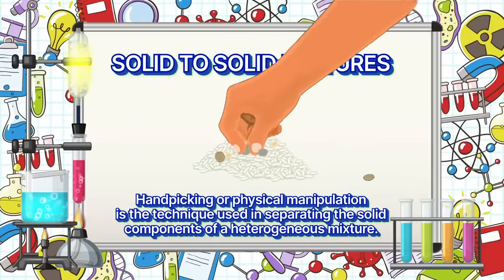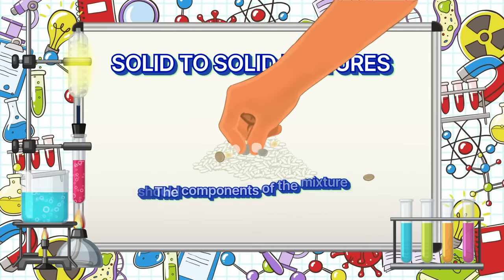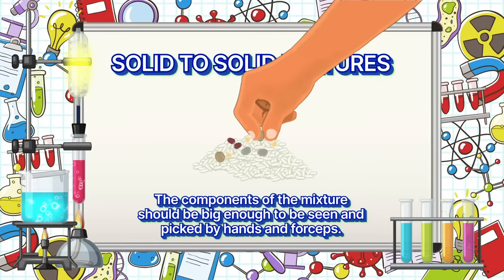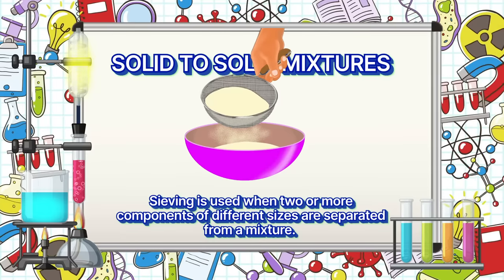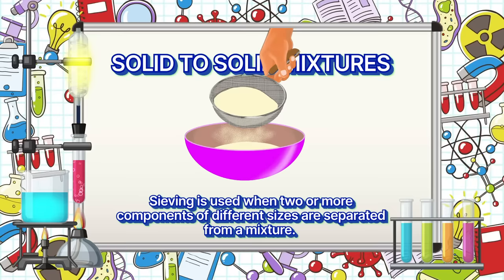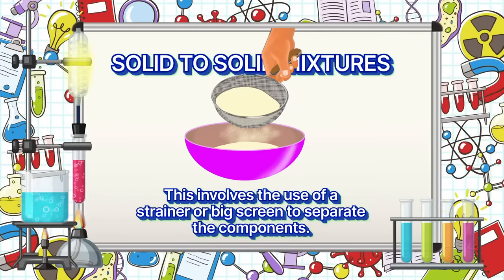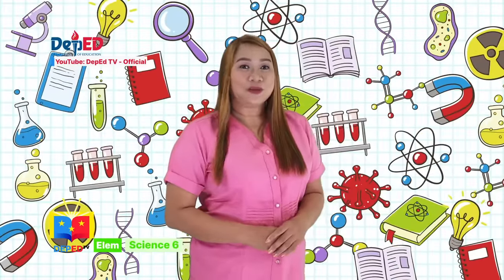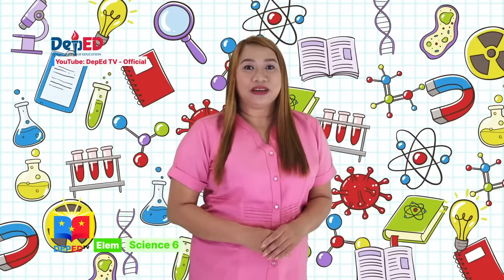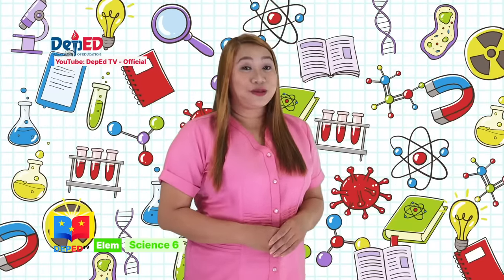Handpicking or physical manipulation is the technique used in separating the solid components of a heterogeneous mixture. The components of the mixture should be big enough to be seen and picked by hands and forceps. Sieving is used when two or more components of different sizes are separated from a mixture, involving the use of a strainer or big screen. Mixtures of metals and non-metals could be separated with the use of magnets. Mixtures of soluble solid and liquid components can be separated by evaporation through heating, and insoluble solid and liquid can be separated through filtration.